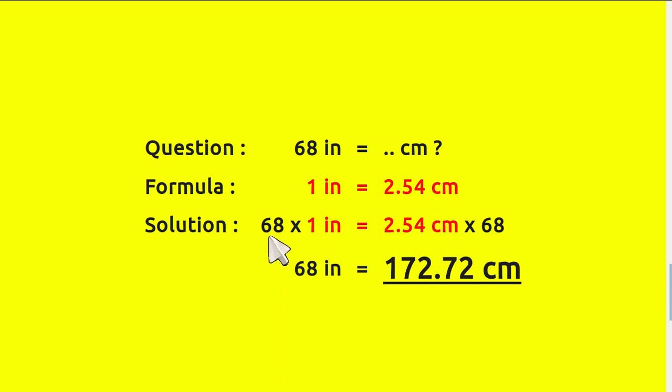Why do we have to multiply both numbers with 68? The reason is the only number we have from the question is this number, 68. So in order to make inches and centimeters equal, we need to put 68 here and another 68 here as well. Which is why now we have 68 here and 68 here. 68 times 1 equals 68 inches.